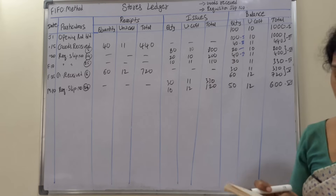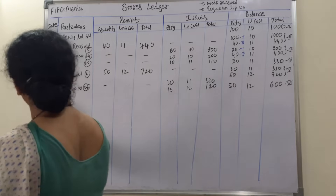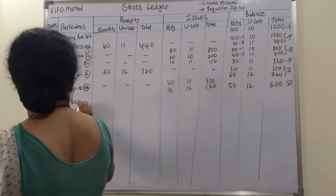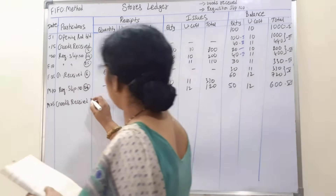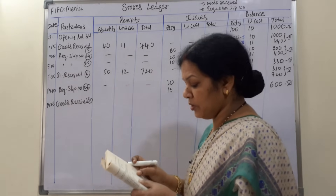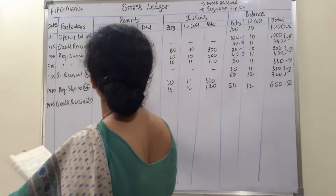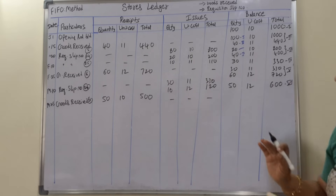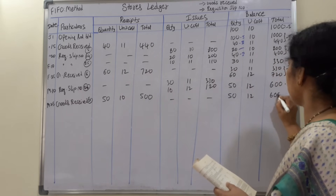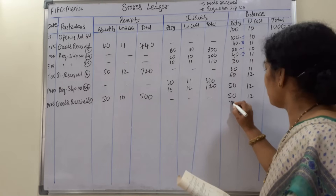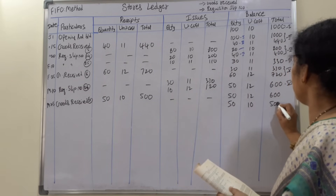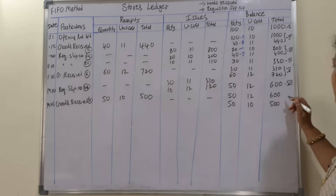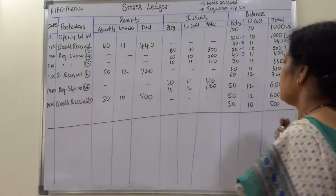March 25th: Purchase — Goods Received, Purchase Order 7. We purchased 50 units at 10 rupees, totaling 500 rupees. The previous balance was 50 units at 12 rupees (600). Now we also have the new 50 units at 10 rupees (500). So the closing balance shows two lines: 50 units at 12 rupees and 50 units at 10 rupees — total 100 units worth 1100 rupees.